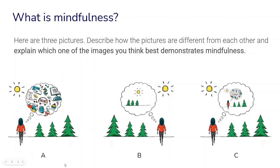In the first image, we see a woman walking in a landscape and having a lot of things in her mind — thinking a lot of different thoughts. In the second image, we see the same woman also walking through a landscape, and seemingly in her mind she observes and notices the landscape with her senses.